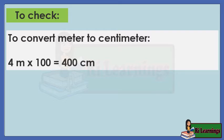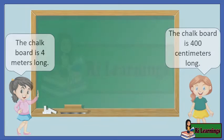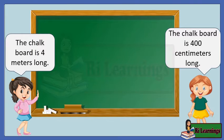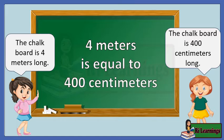To check: to convert meters to centimeters, we multiply 4 meters by 100. 4 meters times 100 equals 400 centimeters. To convert centimeters to meters, we divide 400 centimeters by 100. 400 centimeters divided by 100 equals 4 meters. Both Merites and Anna are correct — 4 meters is equal to 400 centimeters.